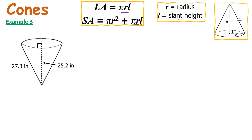The slant height is 27.3, but I don't have the radius. However, because there is a right angle, I can draw a line to create a right triangle. Whenever you have a right triangle and are given two sides and need to find a third, we can always use the Pythagorean theorem.